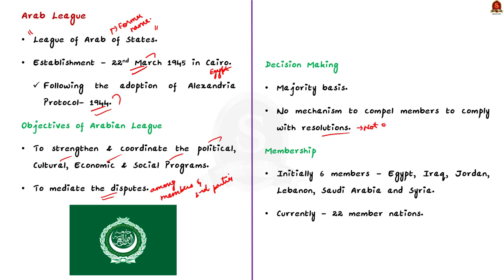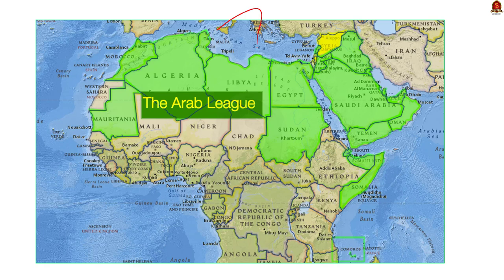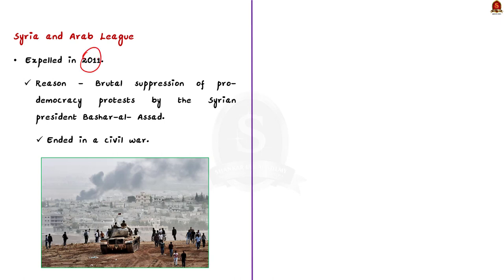Initially, the Arab League had only six members: Egypt, Iraq, Jordan, Lebanon, Saudi Arabia, and Syria. Currently, the Arab League consists of 22 member nations. Syria was expelled from the Arab League in 2011 because Syrian President Bashar al-Assad brutally suppressed pro-democracy protests, which ultimately ended in a civil war. As a result, half a million people were killed and 23 million people were displaced.